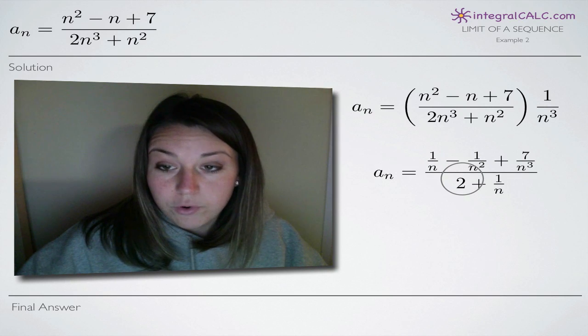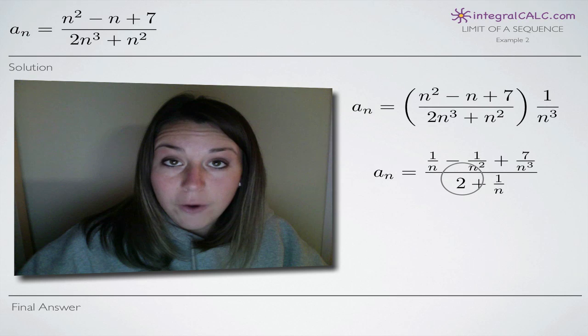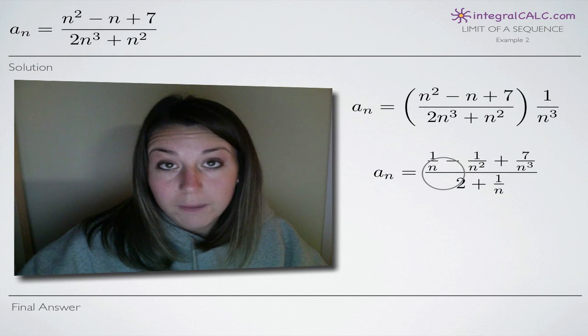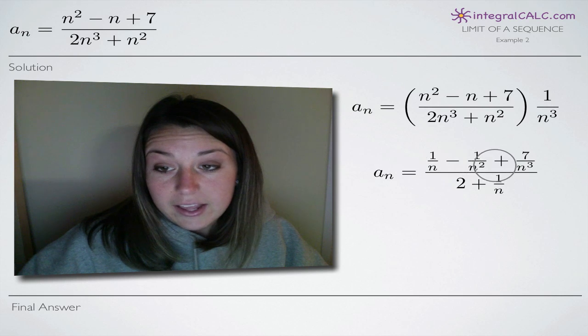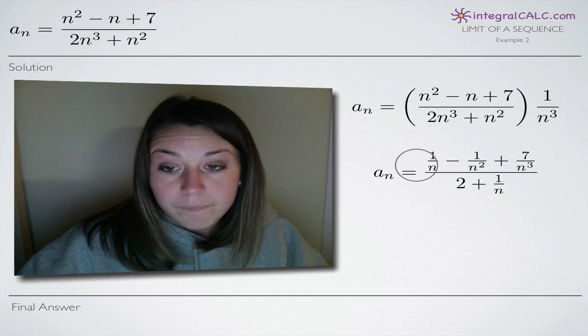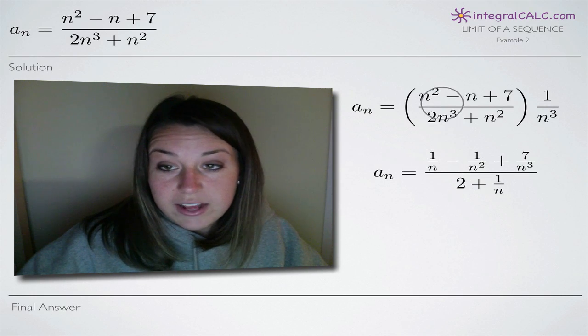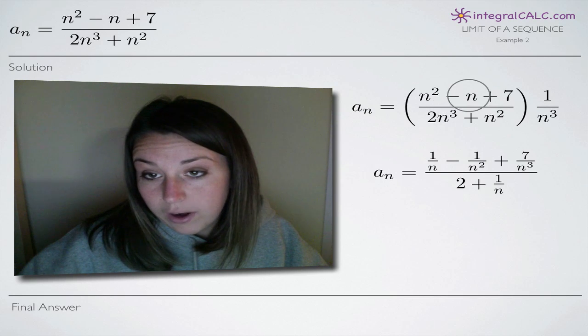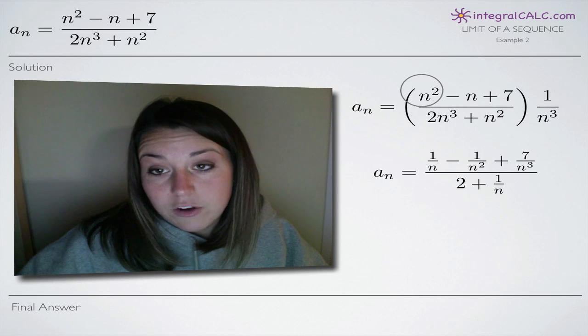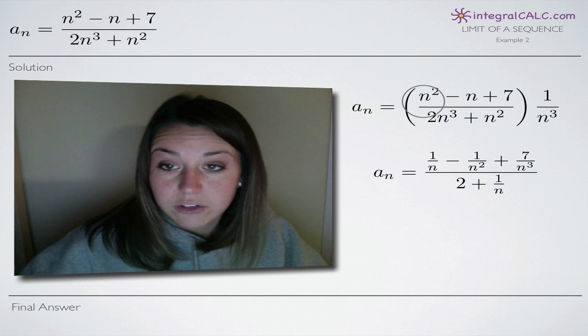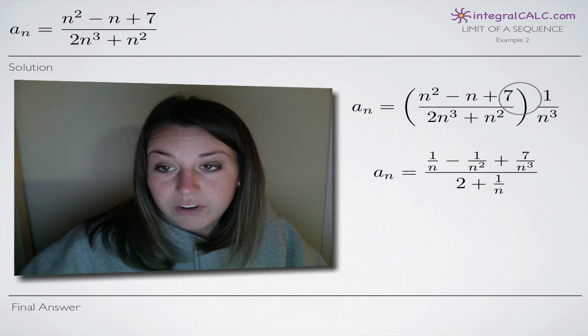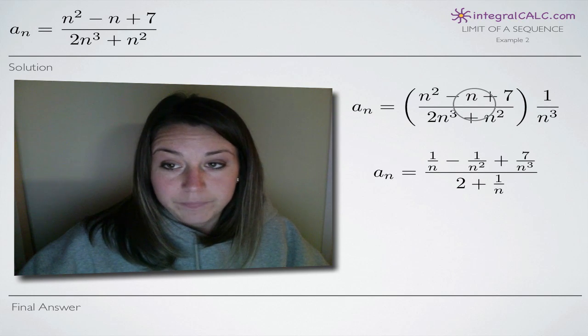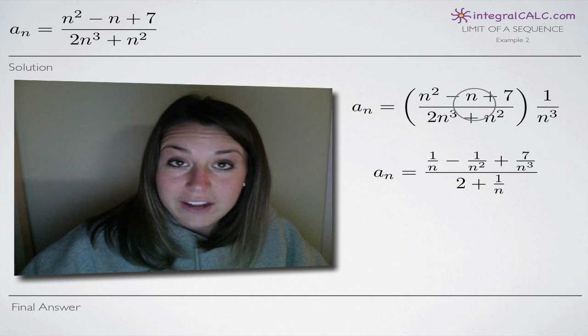And like I said before, the reason that we want to do that is because now we're going to take the limit of the sequence as n approaches infinity, which means that we're going to plug in infinity everywhere we see n in our function here. If we were to plug infinity into this function here with n squared, n like this and n is in the numerator of each particular term, the function becomes really difficult to work with and we can't solve it.